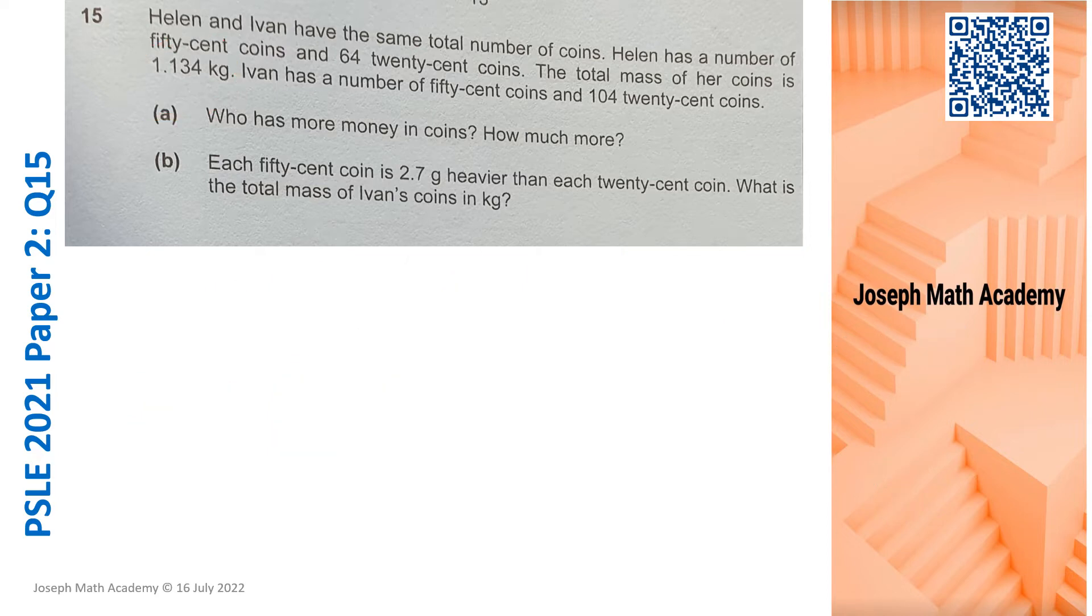Now for part A, I will present this part in the form of a model. They have the same number of coins, so I am going to draw two identical bars. This model shows the coins. Helen has 64 20 cent coins, so this is 20 cents and there are 64 of them.